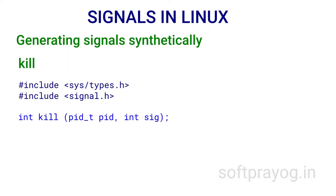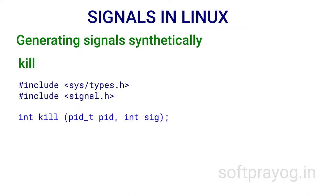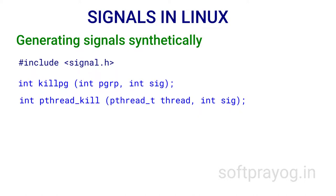The kill system call sends signal sig to a process group or an individual process. If PID is a positive integer, the signal is sent to the process specified by PID. If PID is 0, the signal is sent to all processes in the process group of the calling process. If PID is -1, the signal is sent to all processes the calling process has permission to signal except the init process. If PID is less than -1, the signal is sent to every process whose process group ID is -PID. killpg sends a signal to all processes in the process group identified by PGRP; if PGRP is 0, it sends to all processes in the process group of the calling process.